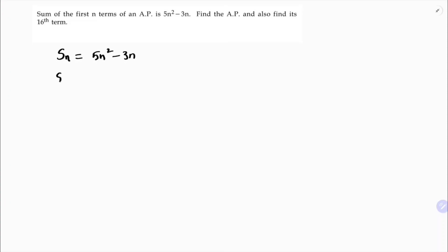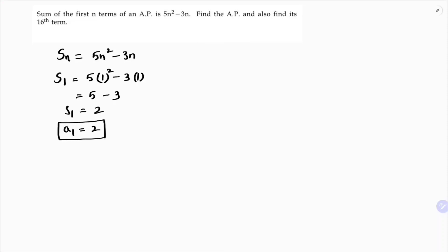First I'll find the sum of one term, S1. So just substituting n=1, I get 5 minus 3 which is 2. So S1 is 2. S1 is nothing but the sum of one term, and sum of one term is nothing but the first term. So the first term a1 is 2.